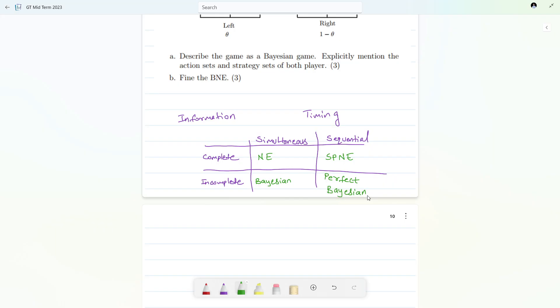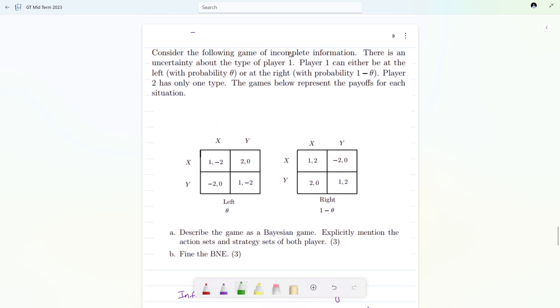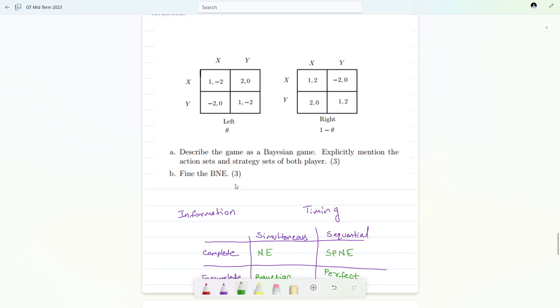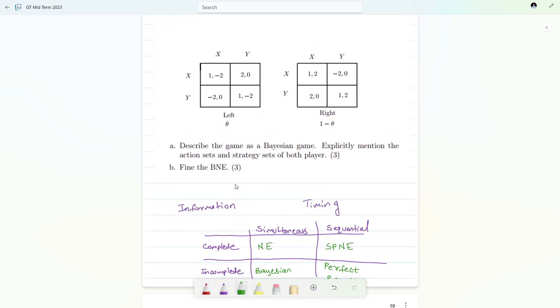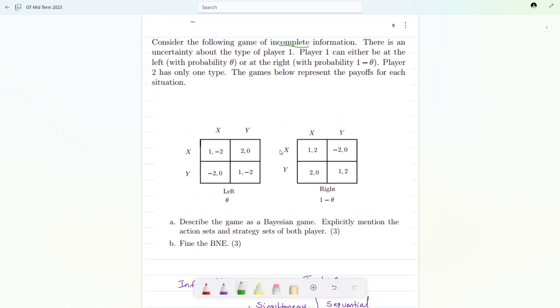Now let's move to the game which we were given in the midterm examination. Consider the following game of incomplete information. We got a hint that we need to find either this Bayesian game or perfect Bayesian, although in the question it has already described that we need to find Bayesian game only.